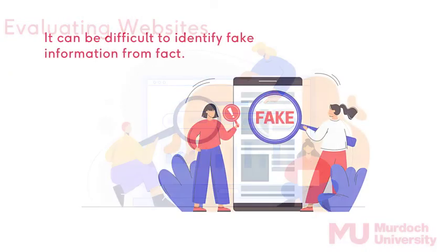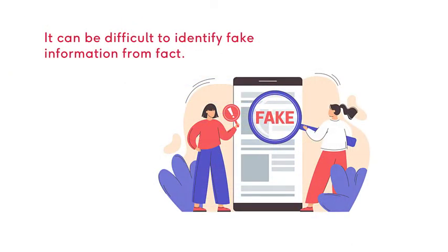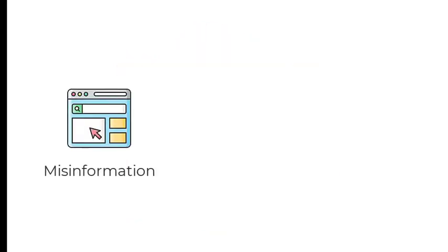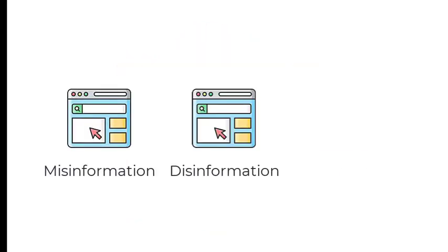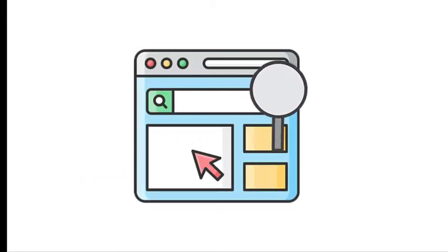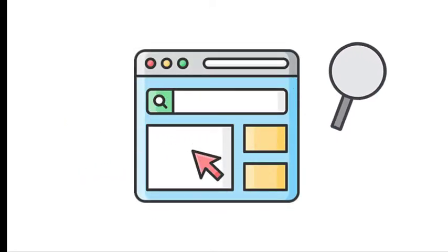It can be difficult to identify fake information from fact, and being able to critically analyse a website is essential when researching for your university work. You'll need to be discerning of information you find and its source. You'll also need to question and confirm information to identify misinformation, disinformation or propaganda. You can follow these easy steps to evaluate websites for your work.